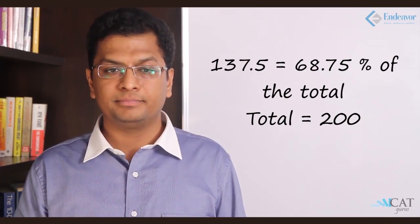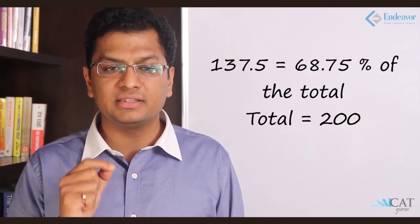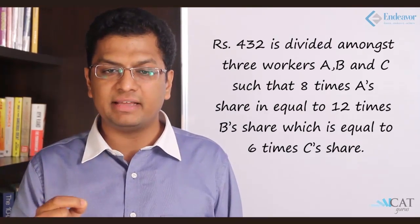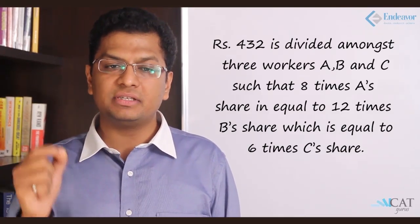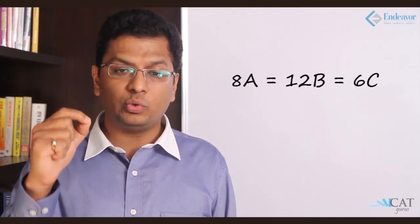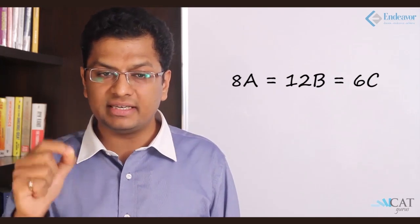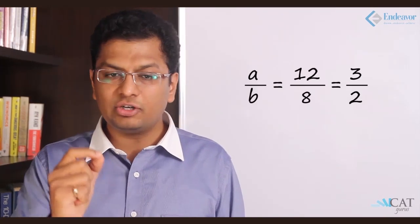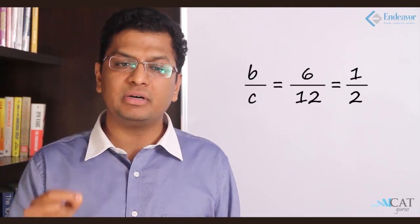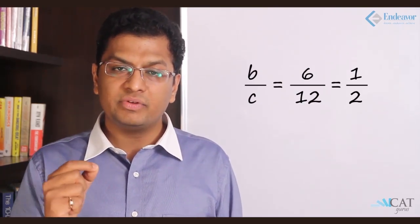Let's have a look at another one. Rupees 432 is divided amongst 3 workers A, B and C in such a manner that 8 times A share is equal to 12 times B share which is equal to 6 times C share. 8 times A is equal to 12 times B which is equal to 6 times C. If I try to reduce it, A is to B is nothing but 12 is to 8 which is 3 is to 2. Similarly, B is to C is nothing but 6 is to 12 which is nothing but 1 is to 2.